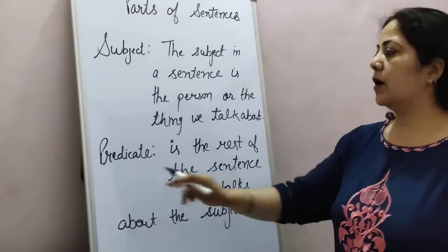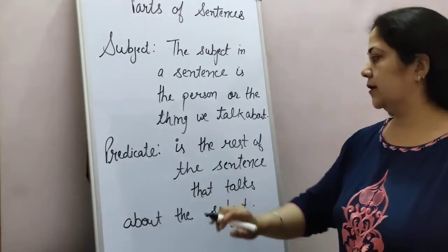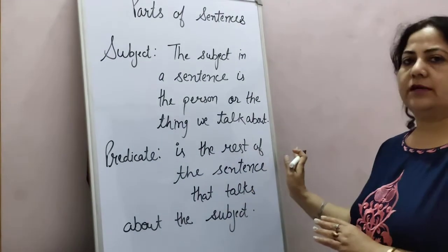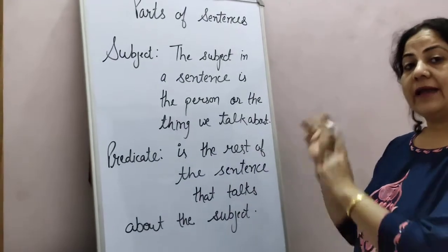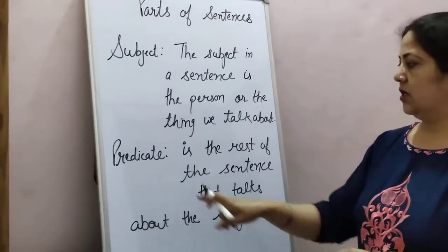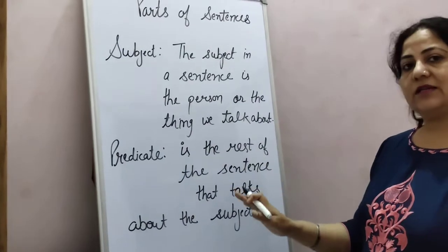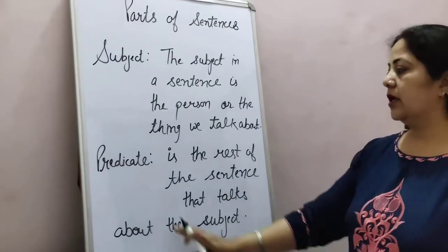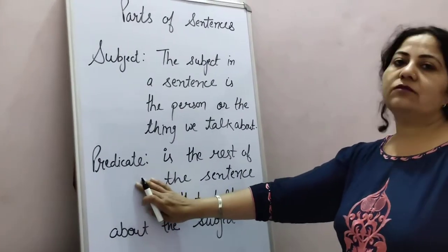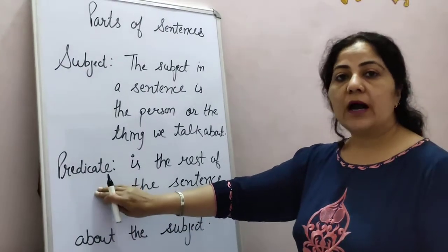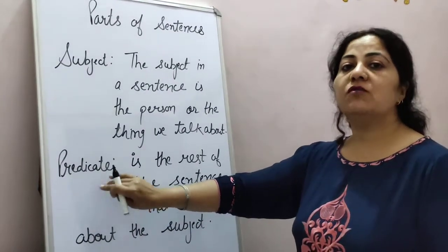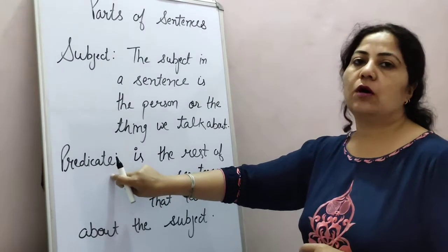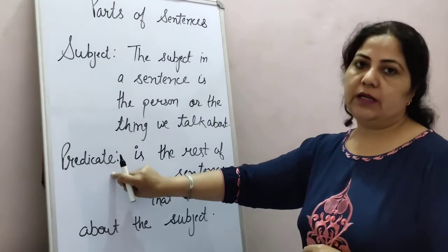The second part of our sentence is predicate. Predicate is the rest of the sentence that talks about the subject. In another word, you can say the verb based part is called predicate.